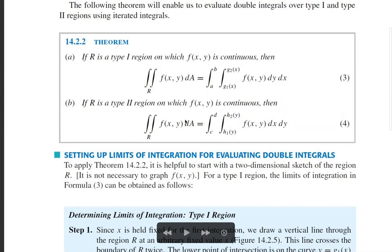For a Type 2 region, the double integral over R equals the integral from y = c to d of the integral from x = h1(y) to h2(y) of f(x,y) dx.